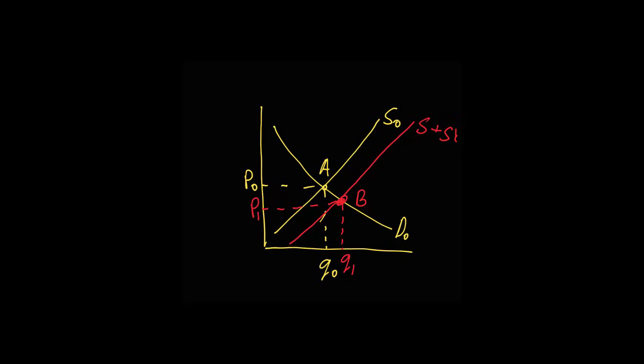So what does this do to our graph? Boom. The entire supply curve just slides over to the right. This shift represents the new reality in the market. Thanks to the subsidy, there's more of the product available at every single price point. With the supply curve now in a new spot, that old balance is history. The market has to find a new sweet spot, a new equilibrium.